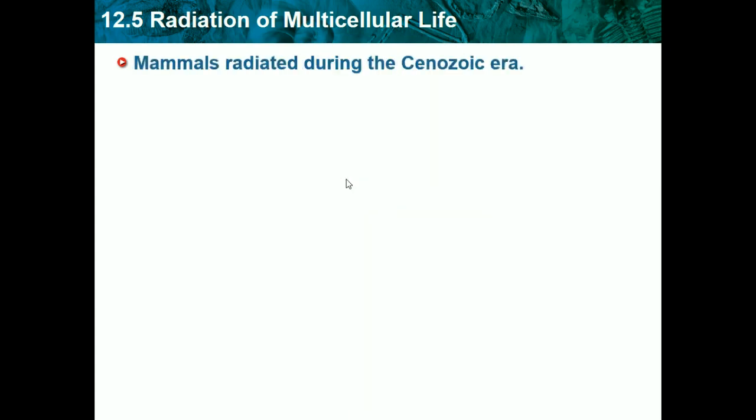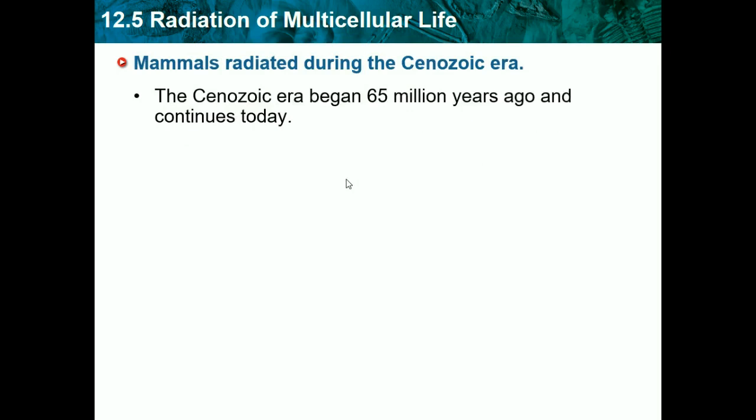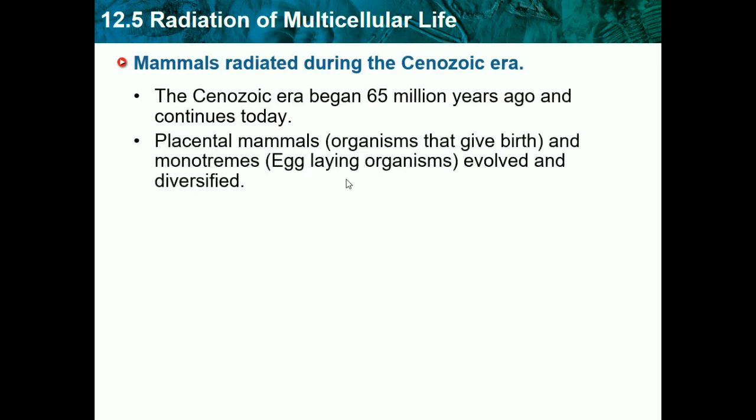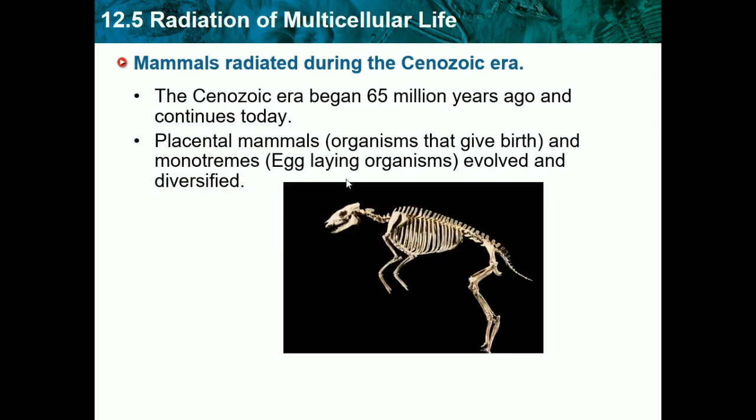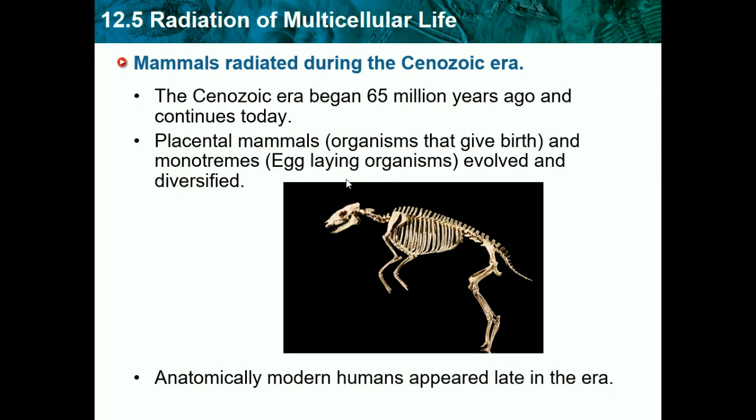Mammals radiated during the Cenozoic era, which is present day. There are two types of animals that thrived during this era: placental mammals that gave live birth, and monotremes, which laid eggs. Both diversified in this period, and humans appeared late in this period.